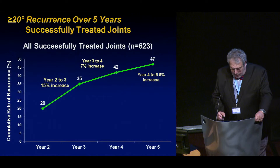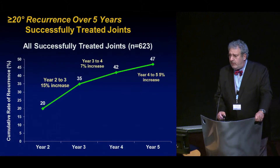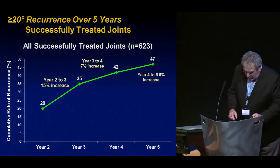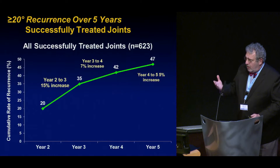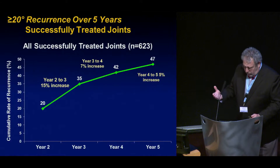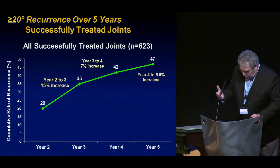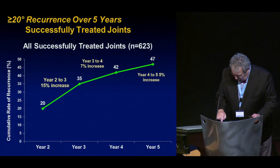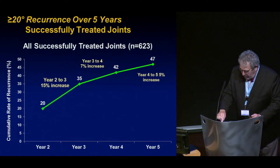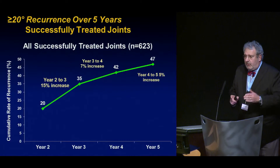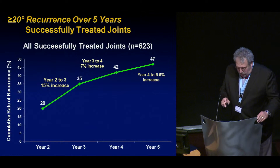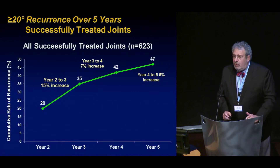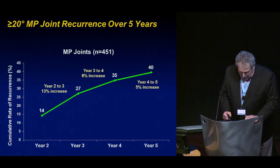Greater than 20 degrees recurrence over five years in successfully treated joints. The recurrence increase in years two to three was 15%, then it drops to 7% in the next year, and 5% increase after that. So it seems to flatten out. If you're going to get a recurrence, most people tend to recur in the two to three-year range, at least according to these data.